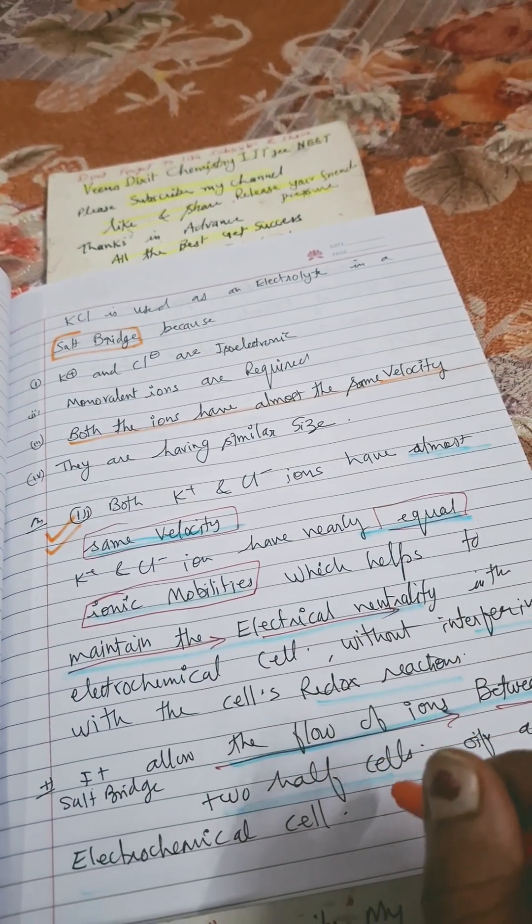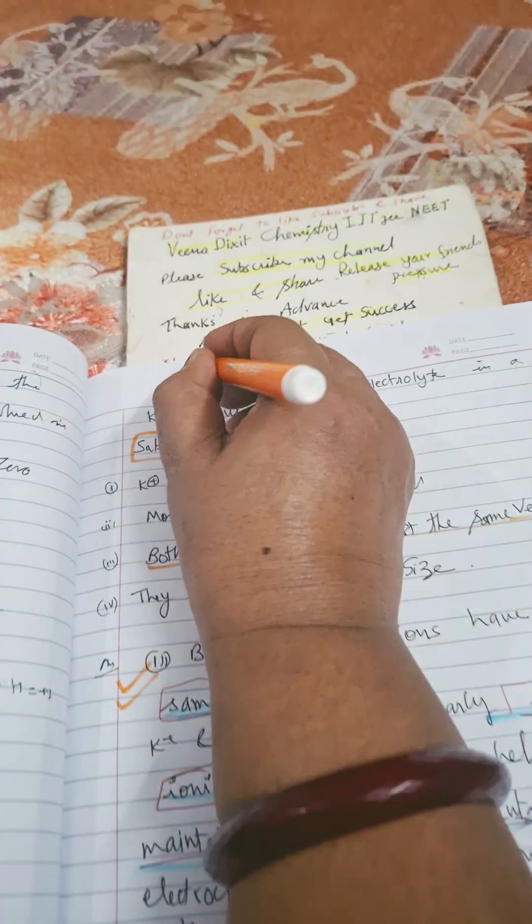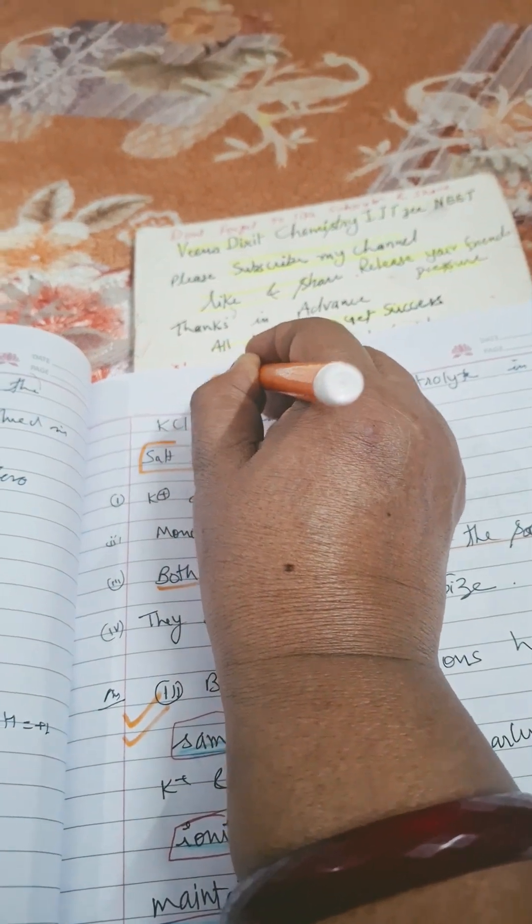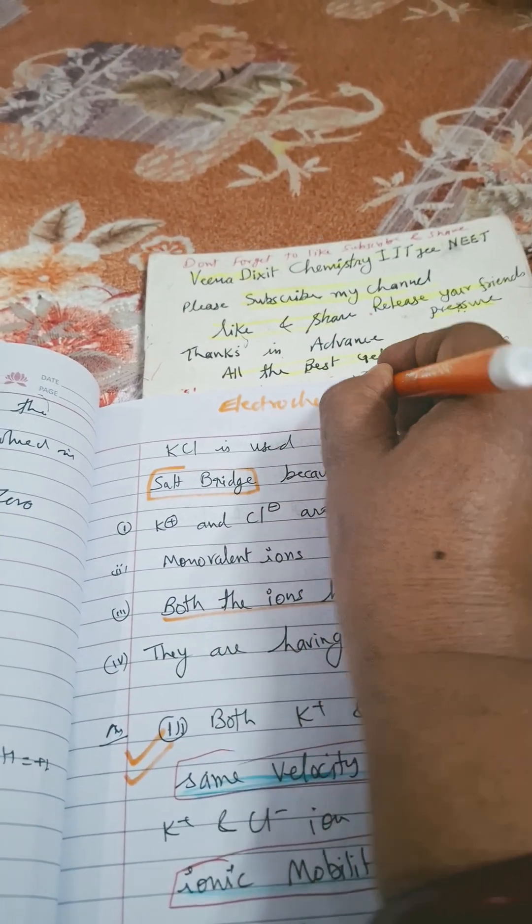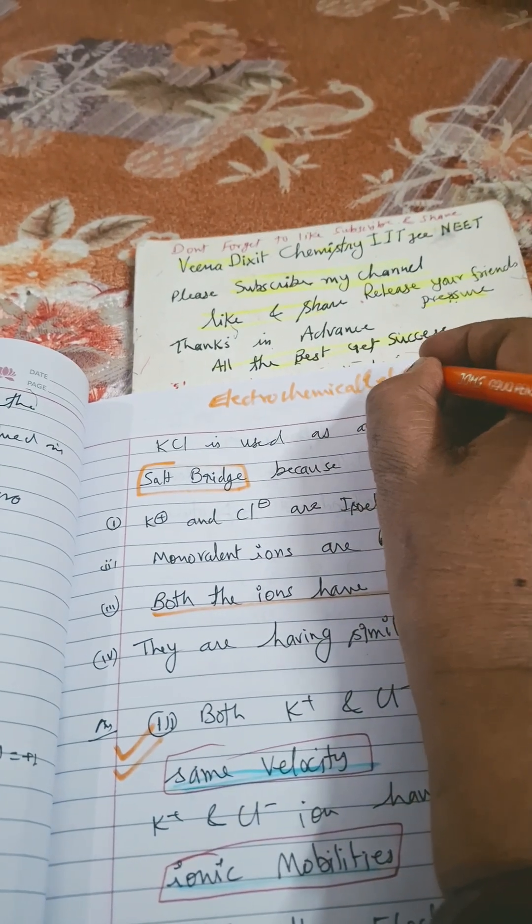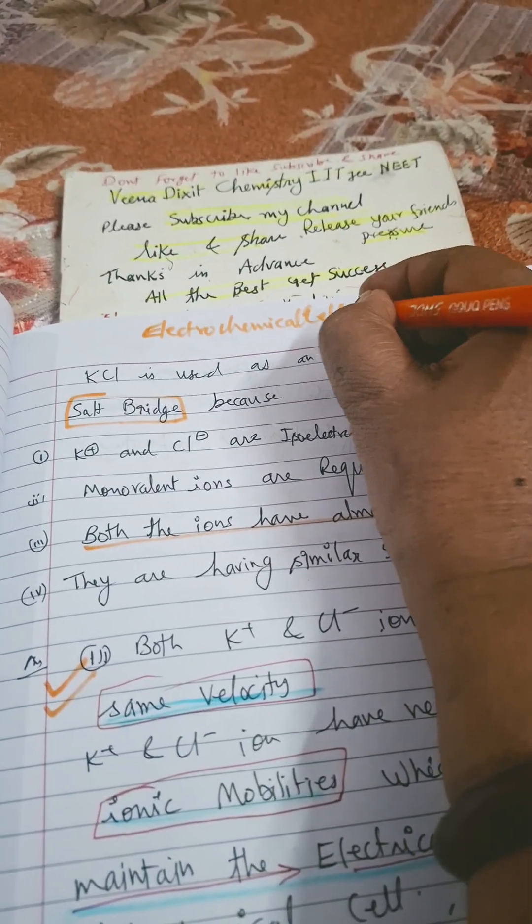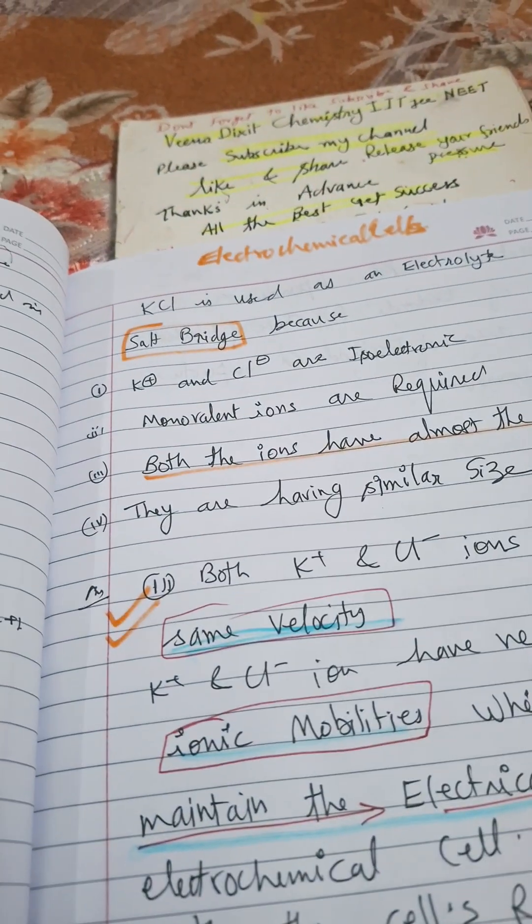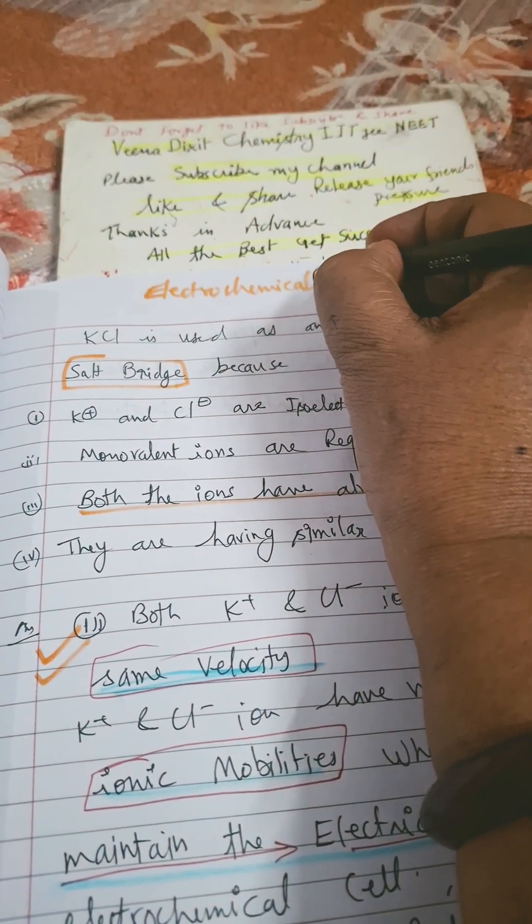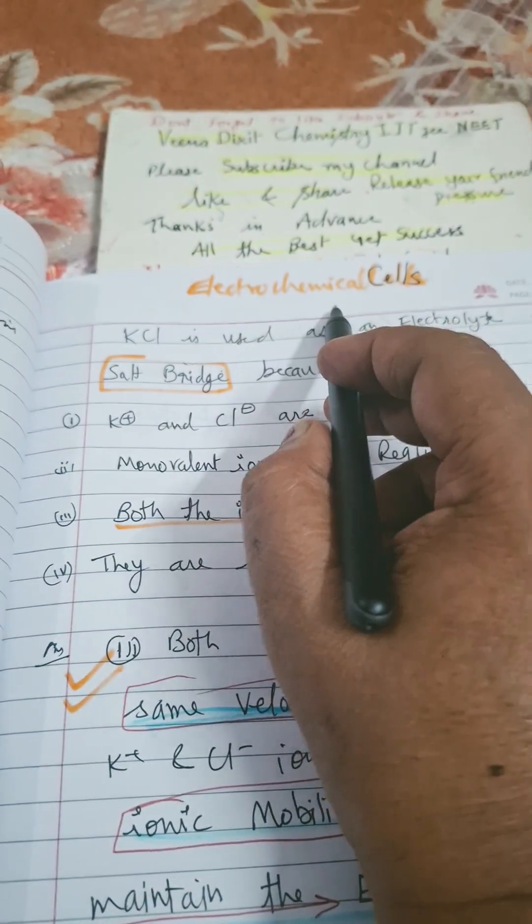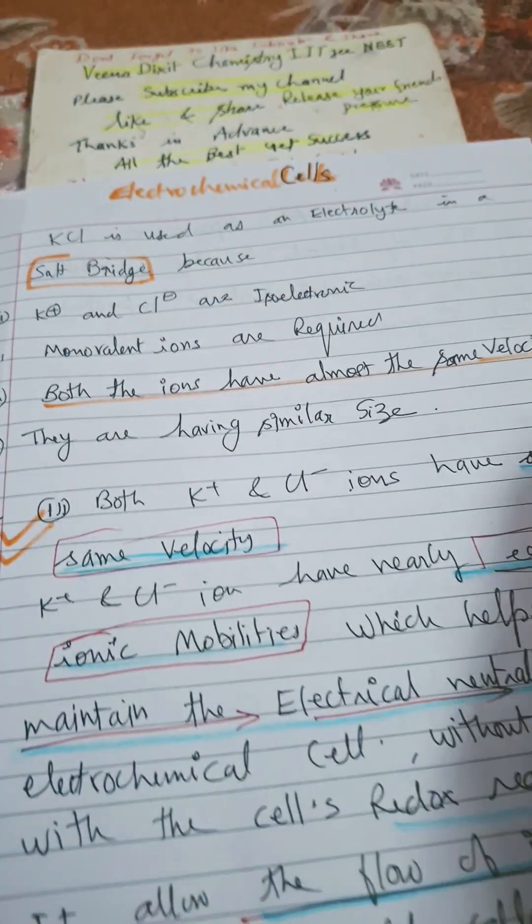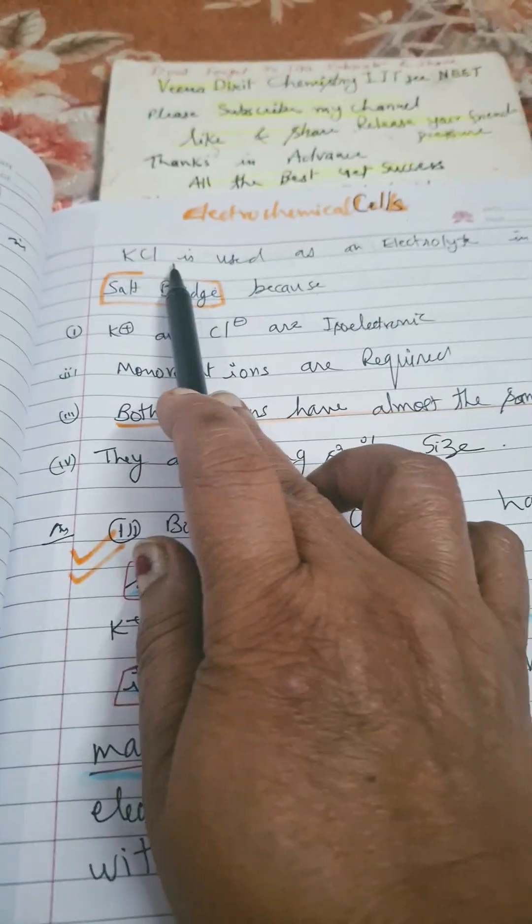Electrochemical cells. We are using them in electrochemical cells. So KCl is the salt bridge which is used in electrochemical cells, and they are asking why we are using KCl in electrochemical cells as a salt bridge.